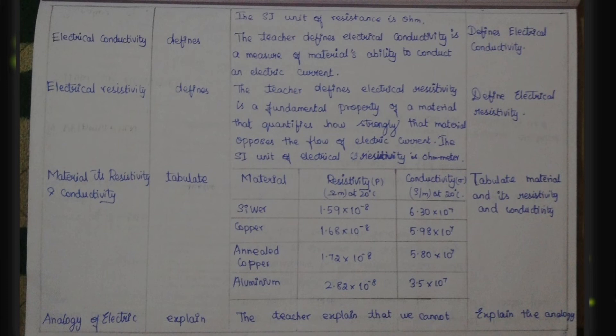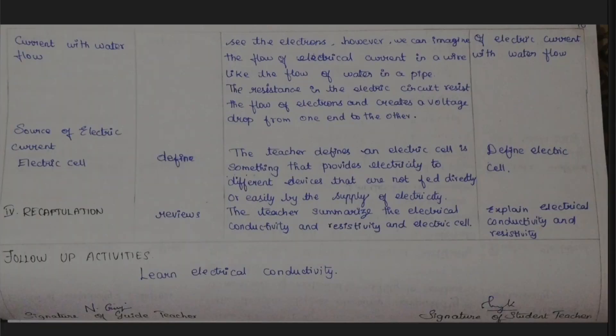Next is the analogy of electric current with water flow. The teacher explains that we cannot see electrons; however, we can imagine the flow of electrical current in a wire like the flow of water in a pipe. The resistance in the electric circuit resists the flow of electrons and creates a voltage drop from one end to the other.